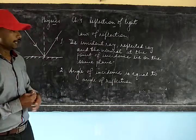I think you know what is angle of incidence and angle of reflection. Angle of incidence is the angle between the incident ray and the normal, so this angle is called angle of incidence.